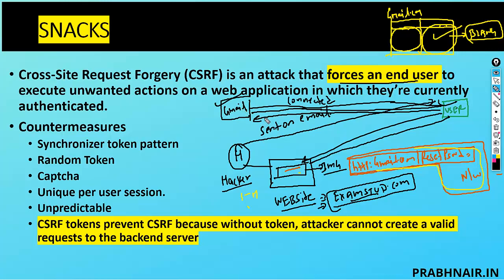Gmail thinks the user has requested a password reset because he is already authenticated. This is how the user's password gets reset to a new password — that is why CSRF is called an attack that forces an end user to execute unwanted actions. The victim just refreshed the page without knowing it contained a script calling gmail.com/resetpassword. Here we exploit the trust the server has on the user — the server assumes the user made the request and executes it.